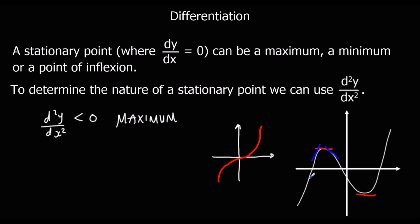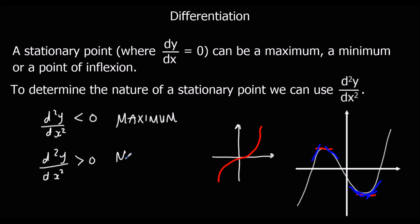And if I look at a minimum, we have a negative gradient that gets bigger and ends up being a positive gradient — so that's increasing. So if the gradient of the gradient is greater than zero, we have a minimum.